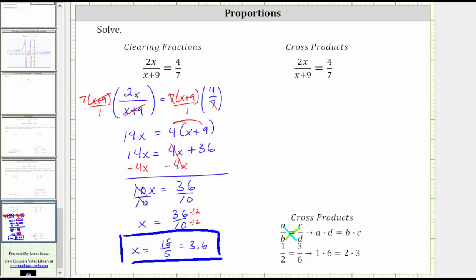So for our proportion, notice how one cross product is 2x times 7, and the other is the quantity x plus 9 times 4. Which means 2x times 7 must equal the quantity x plus 9 times 4, or 4 times the quantity x plus 9.